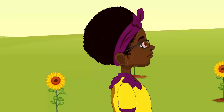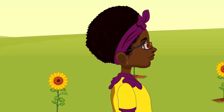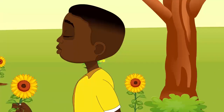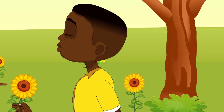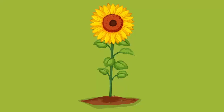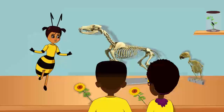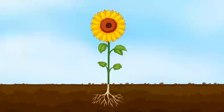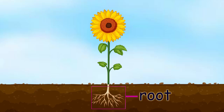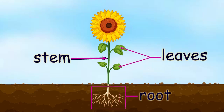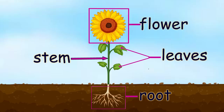Let us go into the science lab to know more about the basic parts of plants. I will tell you more about the parts of plants that help them to prepare their food. Plants have four basic parts: the roots, stem, leaves, and flower.